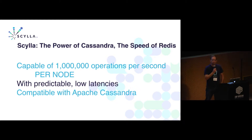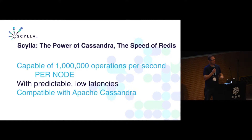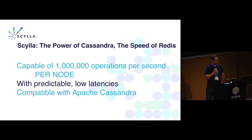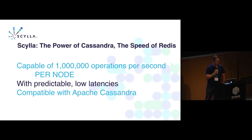We took Cassandra and rewrote the whole application in C. We are able to take a lot of the benefits of using the actual system for your other workloads and take advantage of the hardware, the memory, and the CPUs. We are capable of doing more than a million transactions per one node and we are as scalable as Cassandra is. Very predictable in terms of latencies, and we have users who tell us that's the case and we'll show you some slides about that.